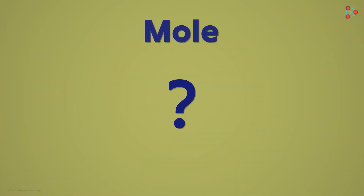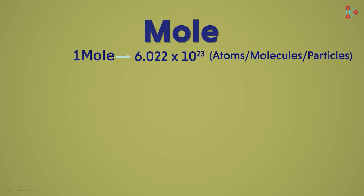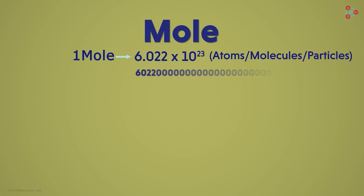What does it mean? It's very easy. One mole of anything has 6.022 x 10 raised to 23 atoms, molecules, or particles present inside it. Isn't this number huge? If I have to write down the zeros, this is how big the number will look. One mole of anything has these many particles. This value is a basic but important measuring unit in chemistry, used for measuring the number of large entities like atoms and molecules.